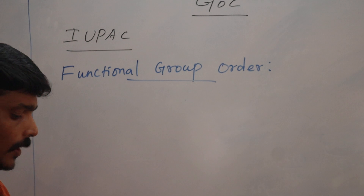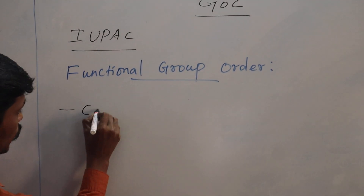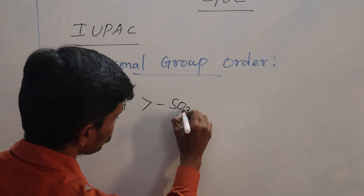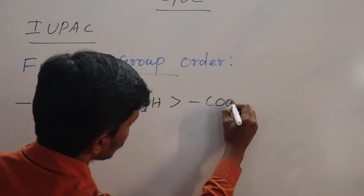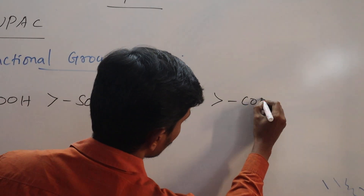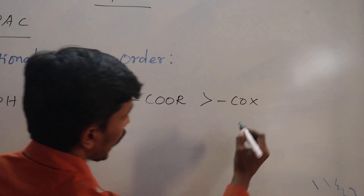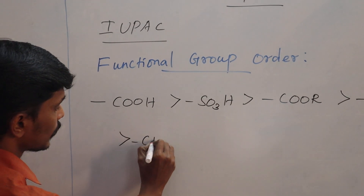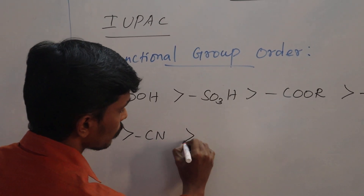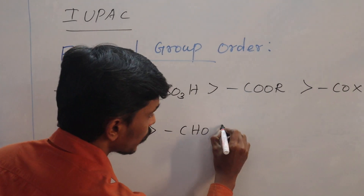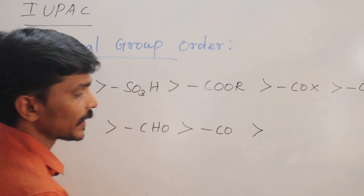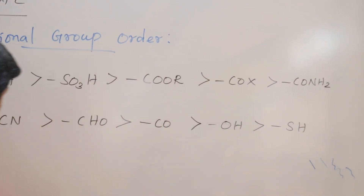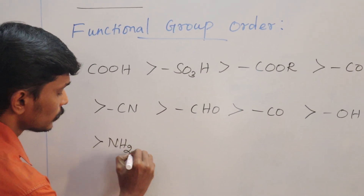How can we talk about functional group order? First preference: Carboxylic Acid, then Sulphonic Acid, then Ester, then Acid Halides, then Amide, then Nitrile, then Aldehyde. Aldehyde is followed by Ketone.